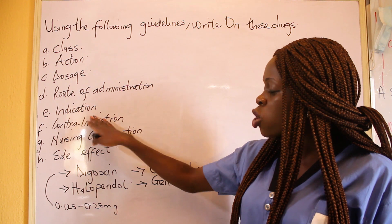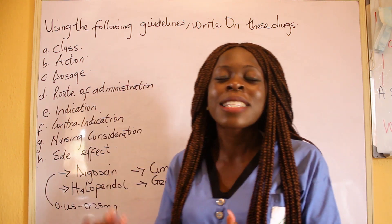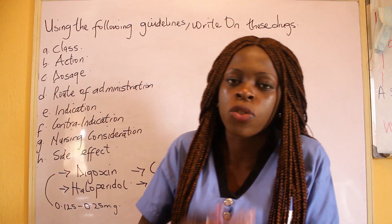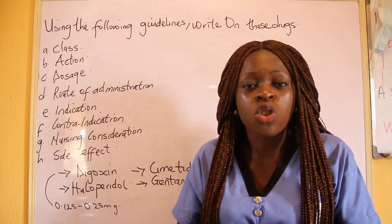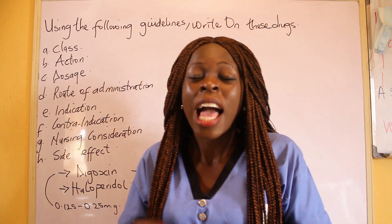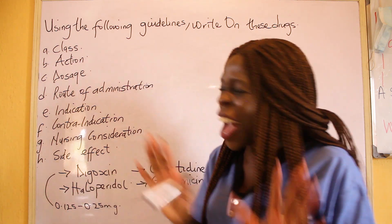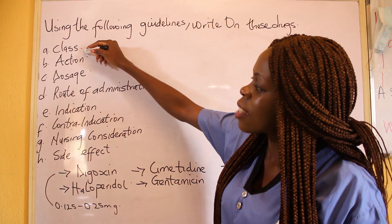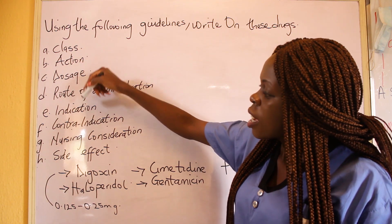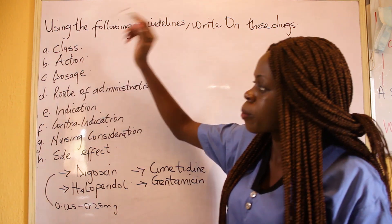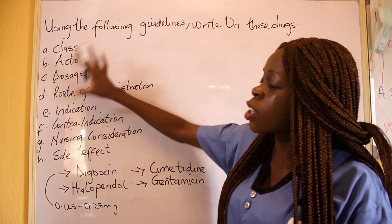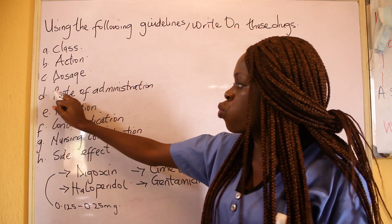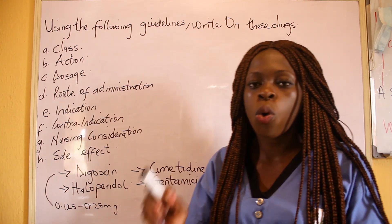Then the other one — indication. Indication is like, what is it used for? What is that particular drug used for? Like I earlier said, digoxin is used to treat heart failure. But the fact is, if you don't know the class, you don't know the action, you don't know the dosage, definitely you are not going to know the indication. So two marks are already gone. Let's assume two marks are already gone. But at least you've been able to write the route of administration as orally.